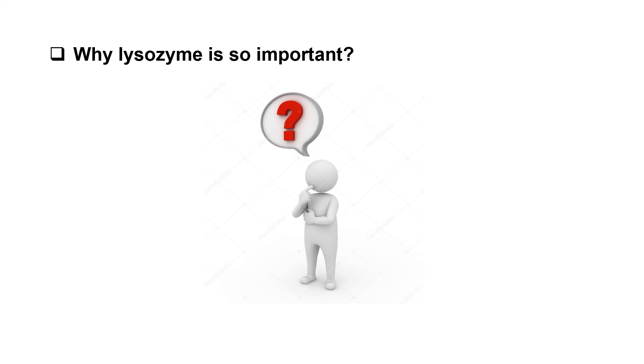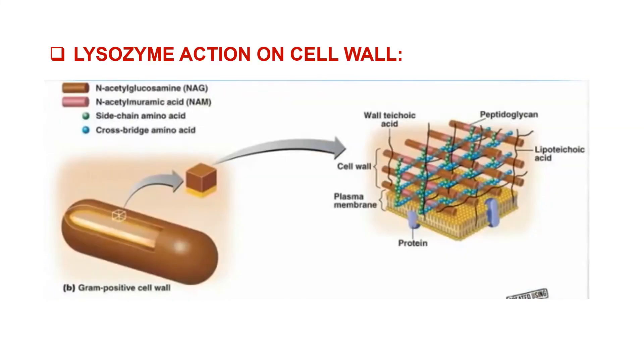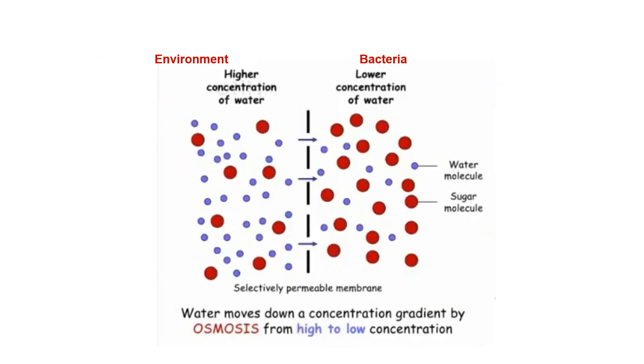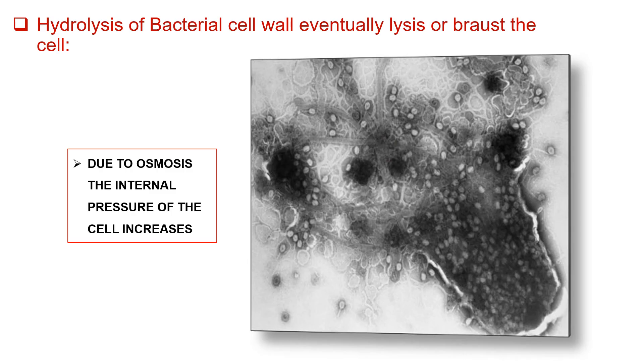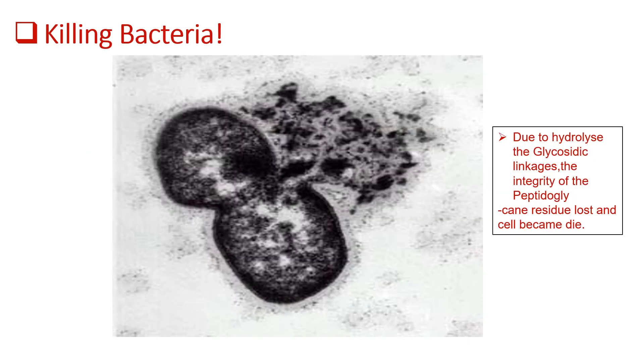Now we can understand how this enzyme breaks the peptidoglycan linkage and why it is so important. The enzyme works on the bacterial cell wall and opens it. Without this cell wall, water goes into the bacterial cell by osmosis. The cell will eventually burst or lyse due to increased internal pressure. Thus, if the glycosidic bond completely breaks down between the two residues, the integrity of the cell wall is lost, killing the bacteria.